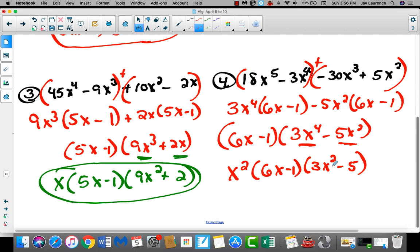Do a 6x minus 1. There will be a 3x squared left minus a 5. Now, if this ended up being like 4x squared minus 9 in here, then I would have to factor by the difference of perfect squares yet again. I'd continue to factor. But for right now, that's the end of the problem.